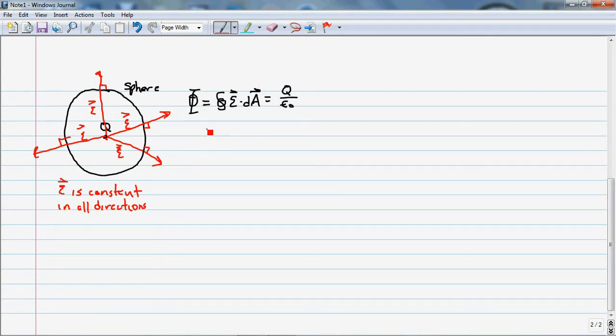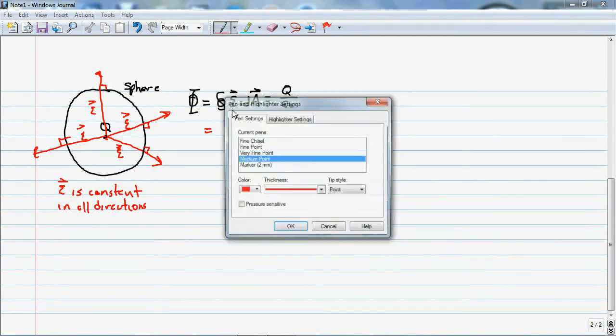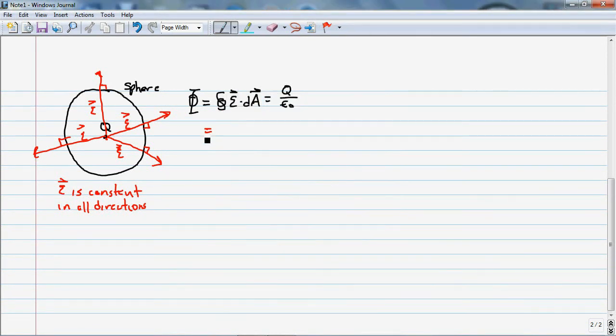And in that case I can take this integral and I can rewrite this and I can say the integral of the magnitude of the electric field times the magnitude of the differential area and the cosine is just going to be zero because remember this is the angle between the electric field and the area vector and they're sitting on top of each other so it's going to be zero is equal to Q divided by epsilon naught.